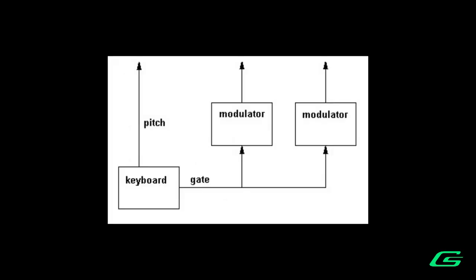Modulators are shown below because they are not usually within the audio path itself. Modulators don't usually produce audio but rather control voltages, also known as CVs. Control voltages are usually below the audio range and cannot be heard, which is why CVs are usually shown in the chart as vertical lines. Modulators themselves may or may not be controlled by other incoming CVs.